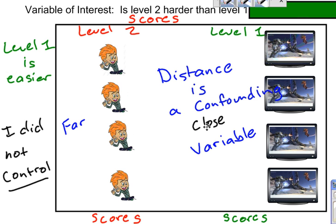The distance that they sat, whether they sat close or far away, turns out to be a confounding variable.